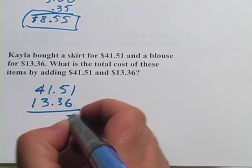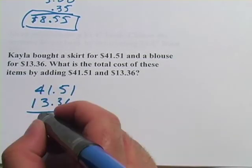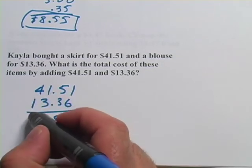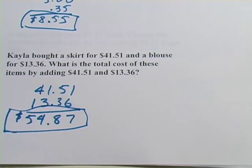1 plus 6 is 7. 5 plus 3 is 8. 1 plus 3 is 4. And 4 plus 1 is 5. So the cost there is $54.87. So that's a little review on addition.